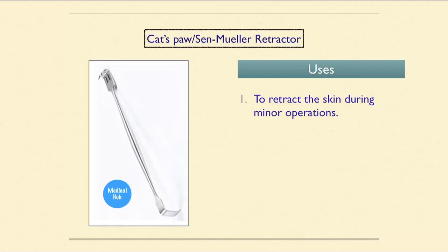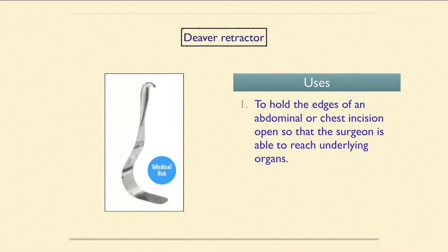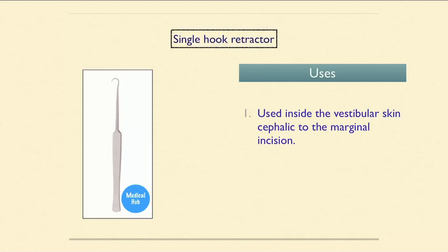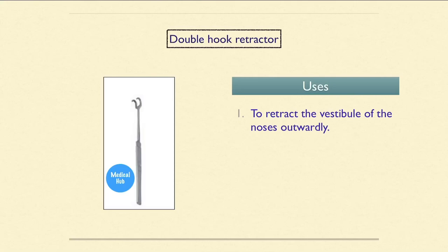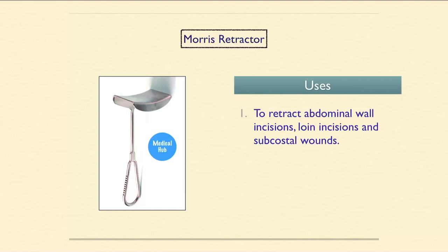The Diver retractor is used to hold the edges of an abdominal or chest incision open so the surgeon can reach underlying organs. The single hook retractor is used inside the vestibular skin separately at the marginal incision. The double hook retractor is used to retract the vestibule of the nose outward.